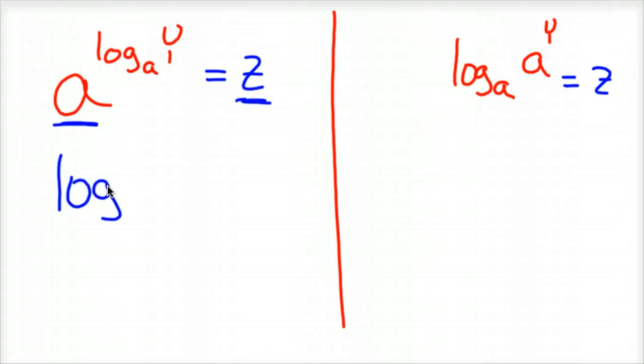So, we go back to here. This is the base of my logarithm. This is my exponent. So, log A of Z equals log A of Y. Okay? And so, we know, because they're both the same on both sides, Z has to be equal to Y.